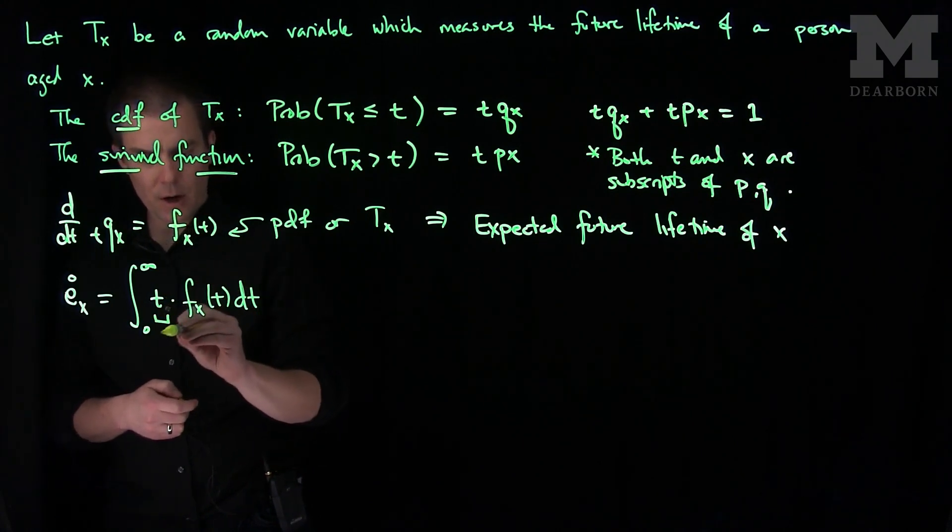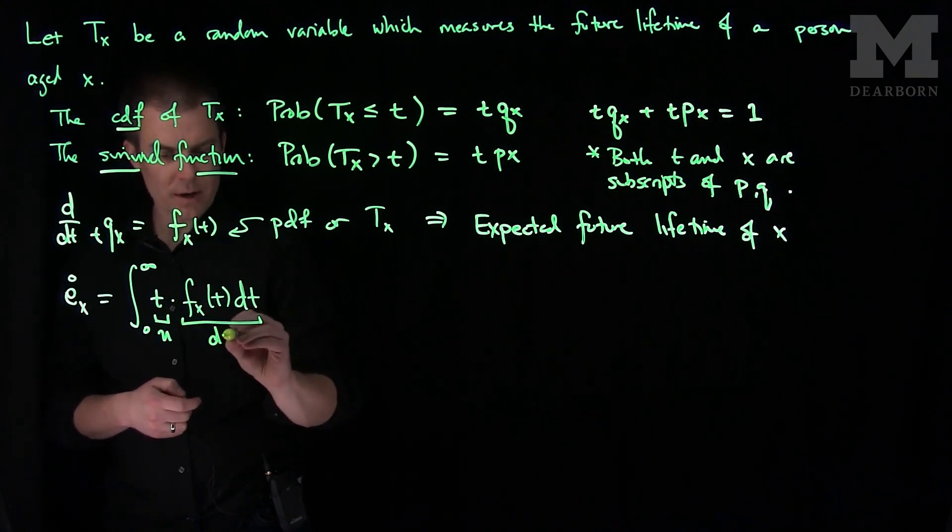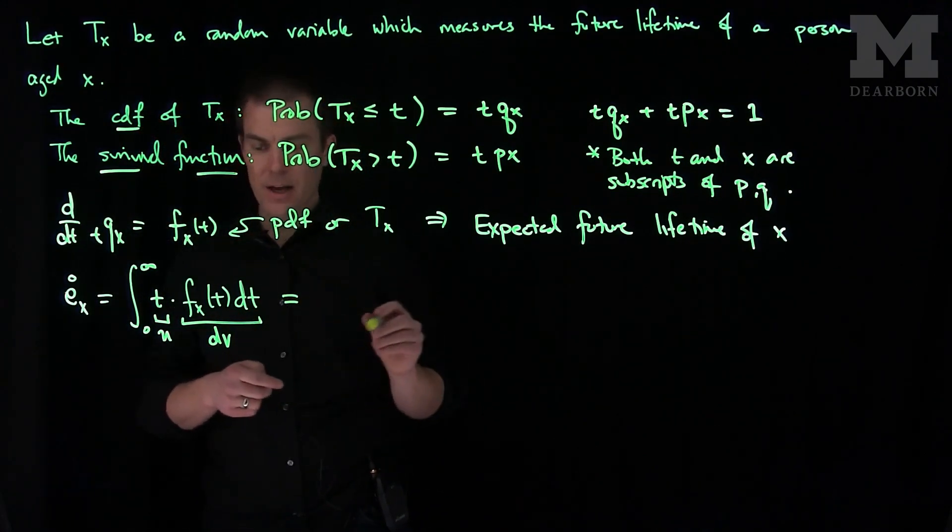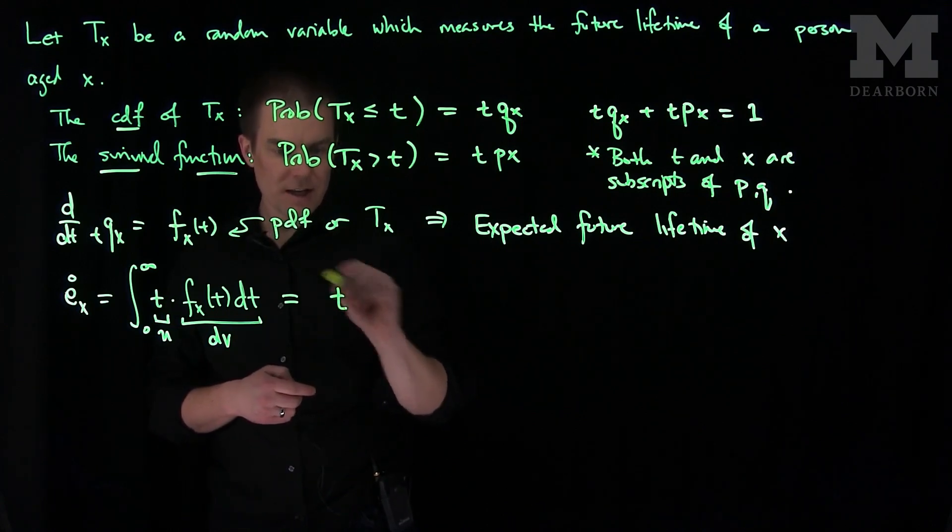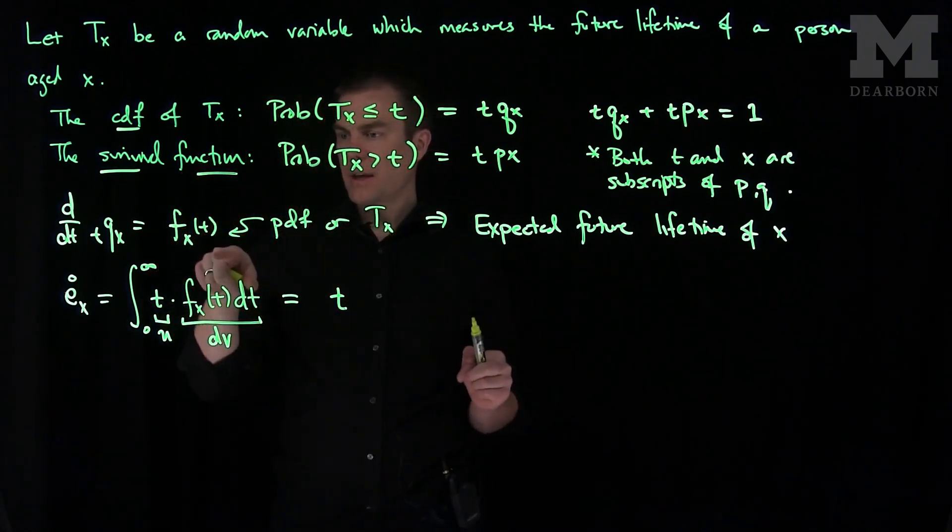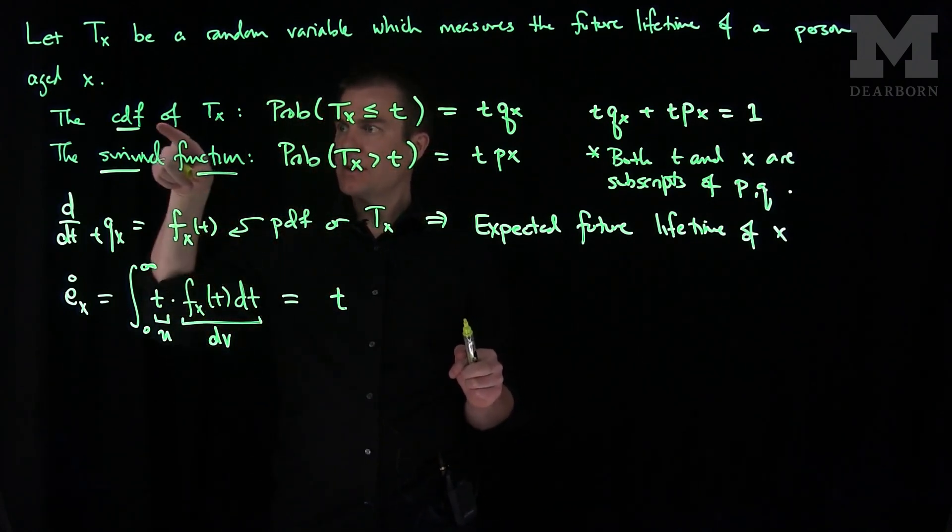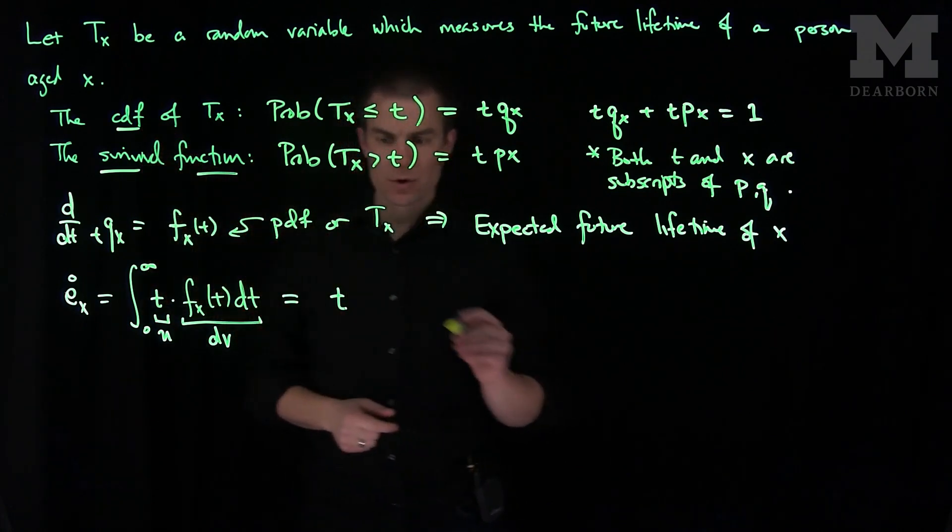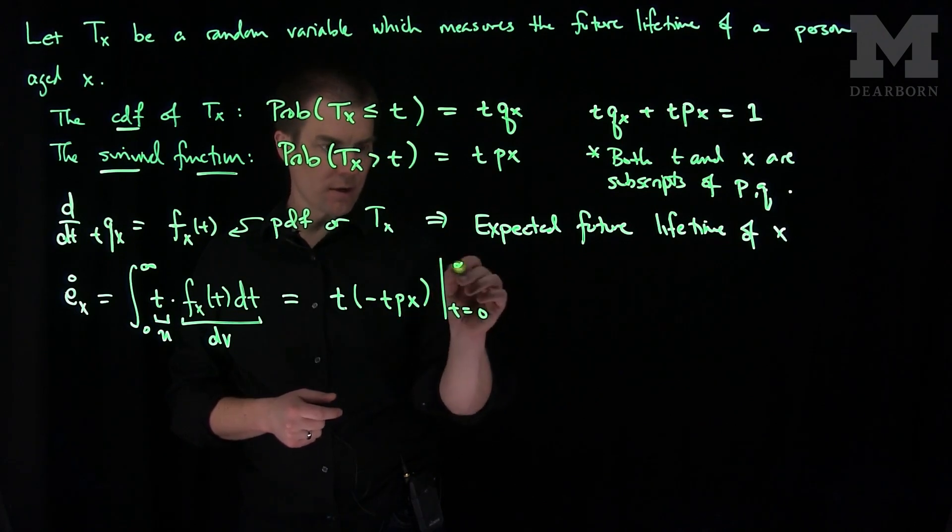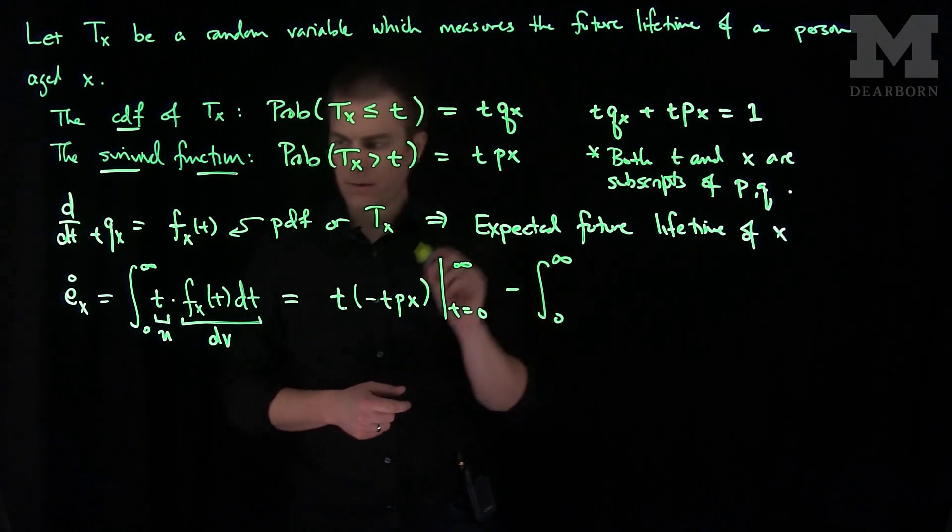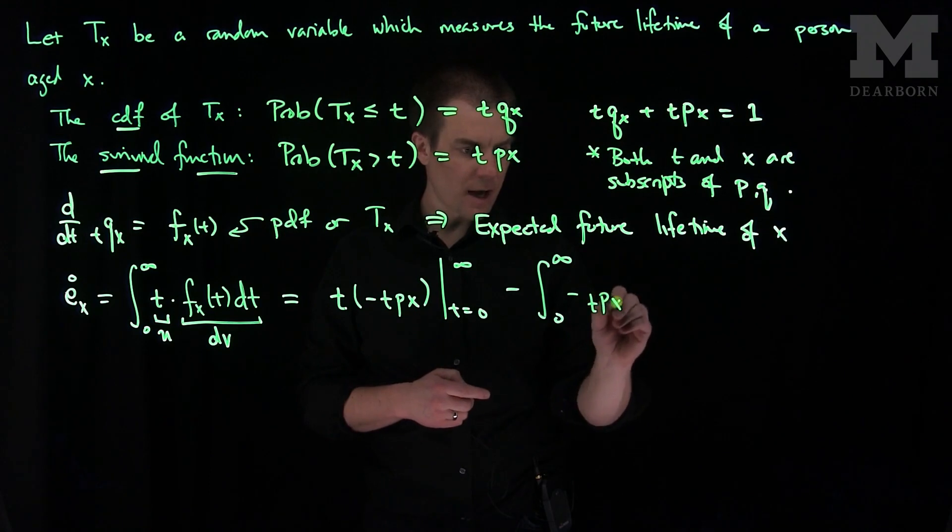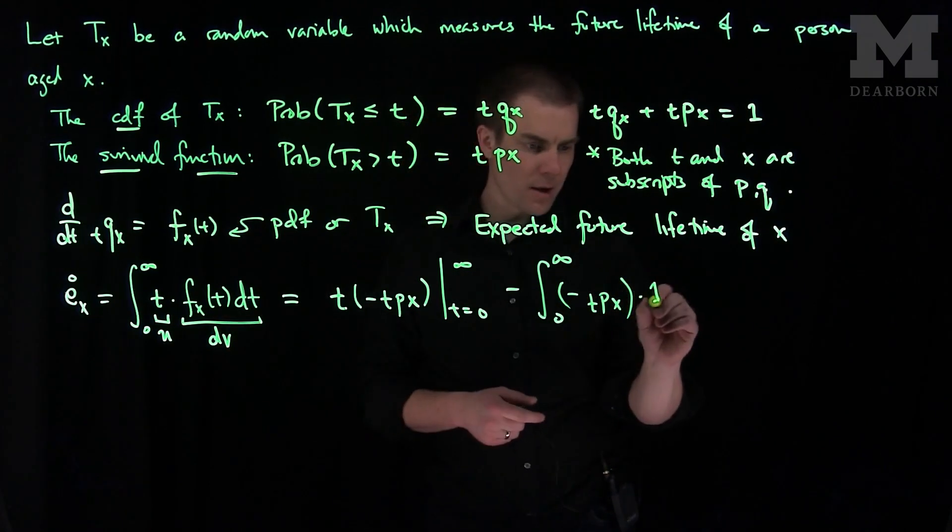By integrating by parts, I have u times v. So I'll write that as t times the antiderivative of the PDF. The antiderivative of the PDF is either the CDF or the negative of the survival function. So we'll put negative tpx, evaluated from t equals 0 to infinity, minus the integral from 0 to infinity of negative tpx times 1 dt.